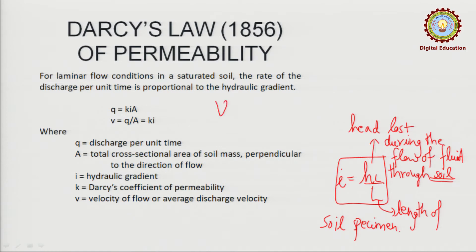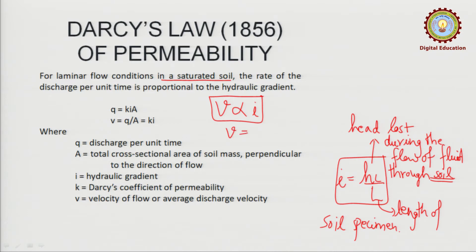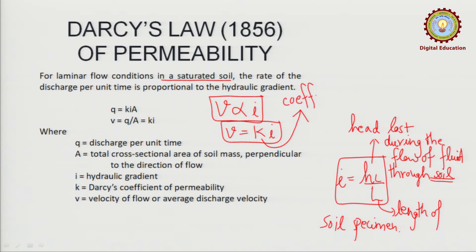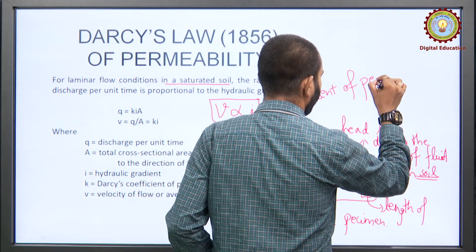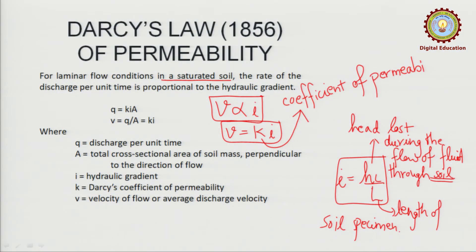To remove the proportionality sign, we write V = Ki, where K is called the coefficient of permeability, or simply permeability. So i is the hydraulic gradient, V is the velocity or rate of discharge, and K is the coefficient of permeability.